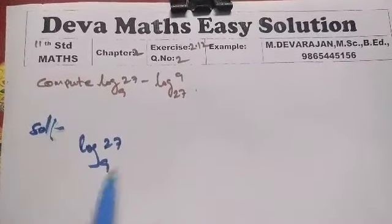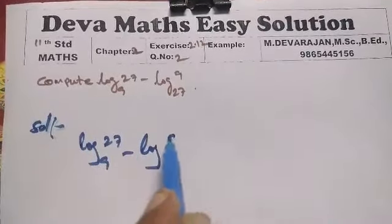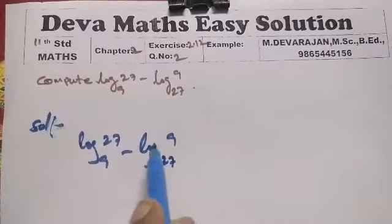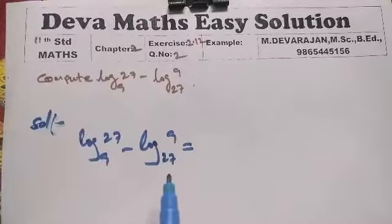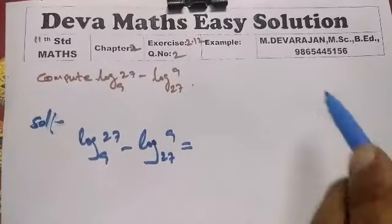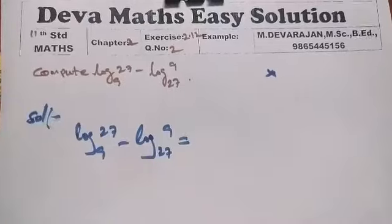Solution: log 27 to the base 9, minus log 9 to the base 27. What we need to do is apply the change of base formula.